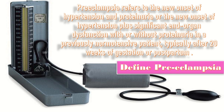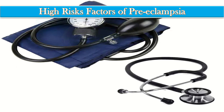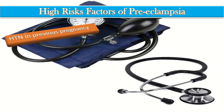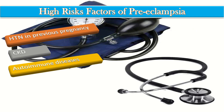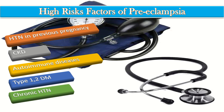Preeclampsia typically occurs after the 20th week of gestation or postpartum. The high-risk factors as mentioned in the NICE guideline include hypertension in a previous pregnancy, chronic kidney disease, autoimmune diseases such as systemic lupus erythematosus or antiphospholipid syndrome, type 1 or type 2 diabetes, and chronic hypertension.